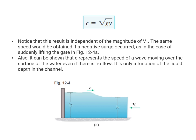Notice that this result is independent of the magnitude of the velocity of the flowing water. The same speed will be obtained if a negative surge occurred, as in the case of suddenly lifting the gate back up. Also, C represents the speed of a wave moving over the surface of the water even if there is no flow — it is only a function of the liquid depth in the channel.